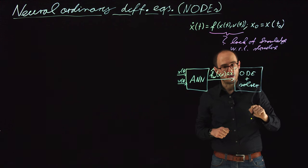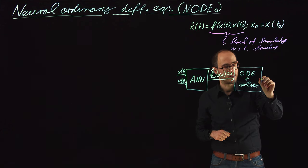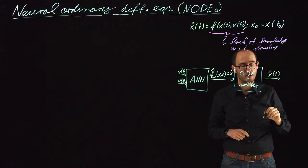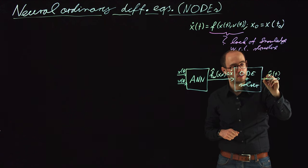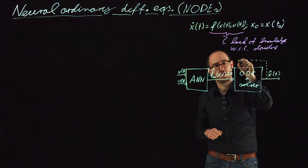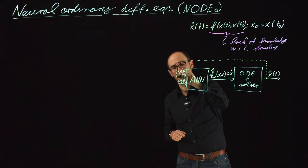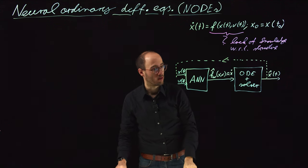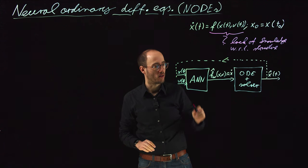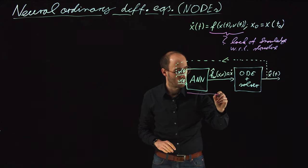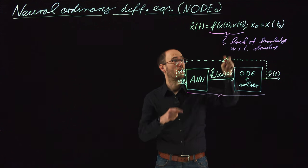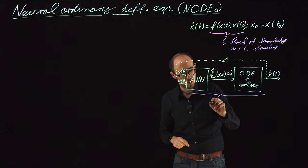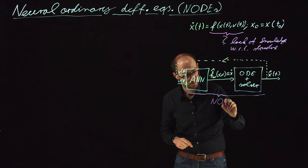If our ODE solver solves this approximate right-hand side, what we get is X-hat of T — our representation of the time-based solution. If we want to utilize that for simulation, we feed it back into the input to have a closed-loop simulation, which we can use to solve the right-hand side. This combination of ANN as an abstract representation of the right-hand side plus the ODE solver is called the NODE approach.